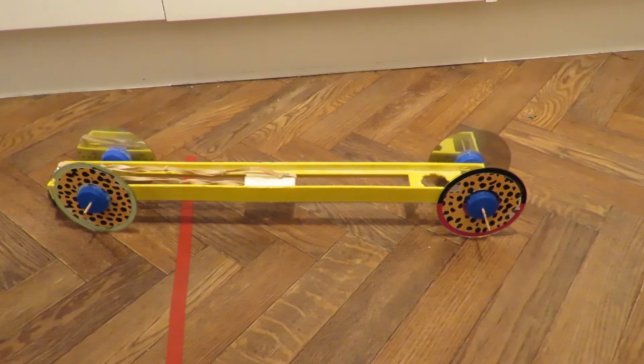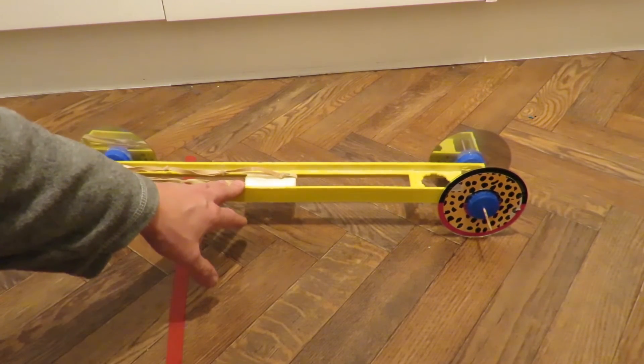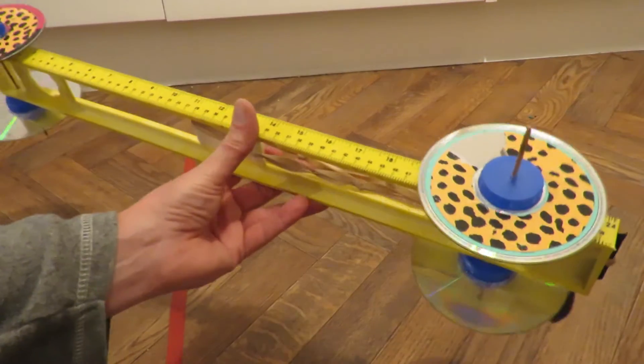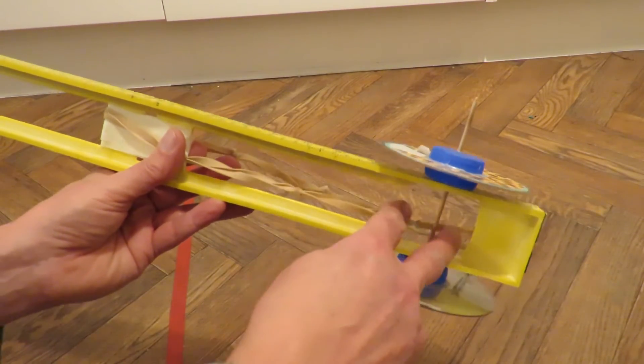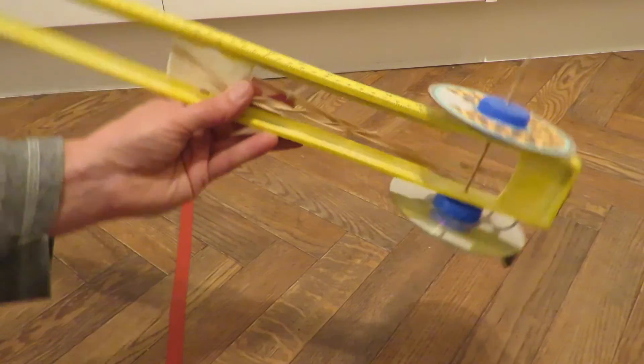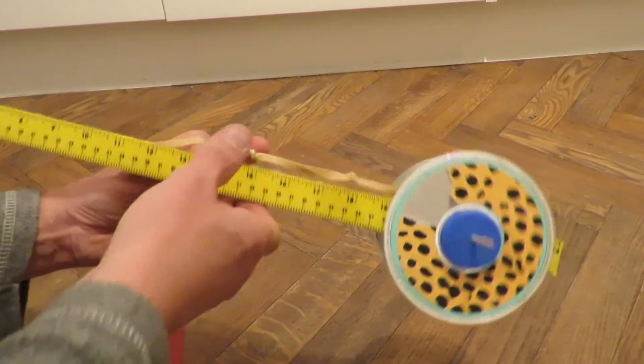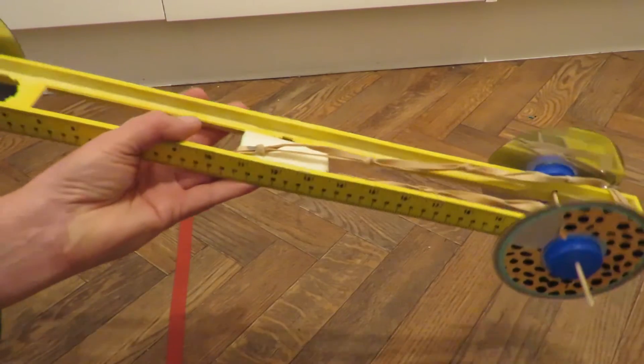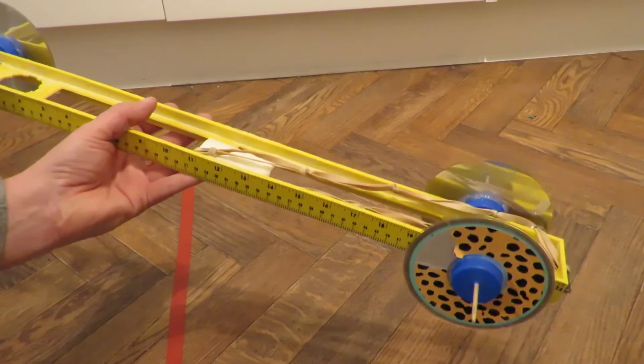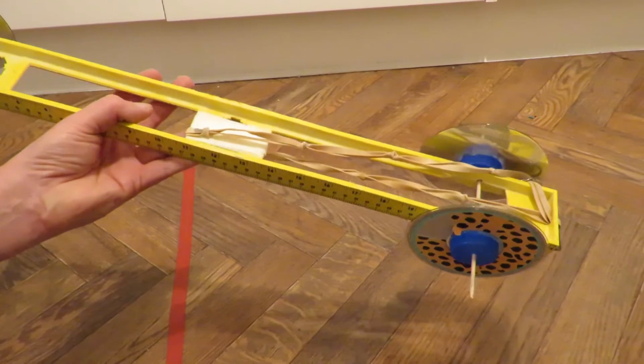So what have we got? The chassis is a plastic spirit level from Poundland that originally would have had some little glass tubes here for checking the level of your work. But I bought it simply because it's a nice rigid plastic assembly that I can use for this sort of purpose. It's more rigid than a bit of cardboard would be, and it's relatively lightweight.